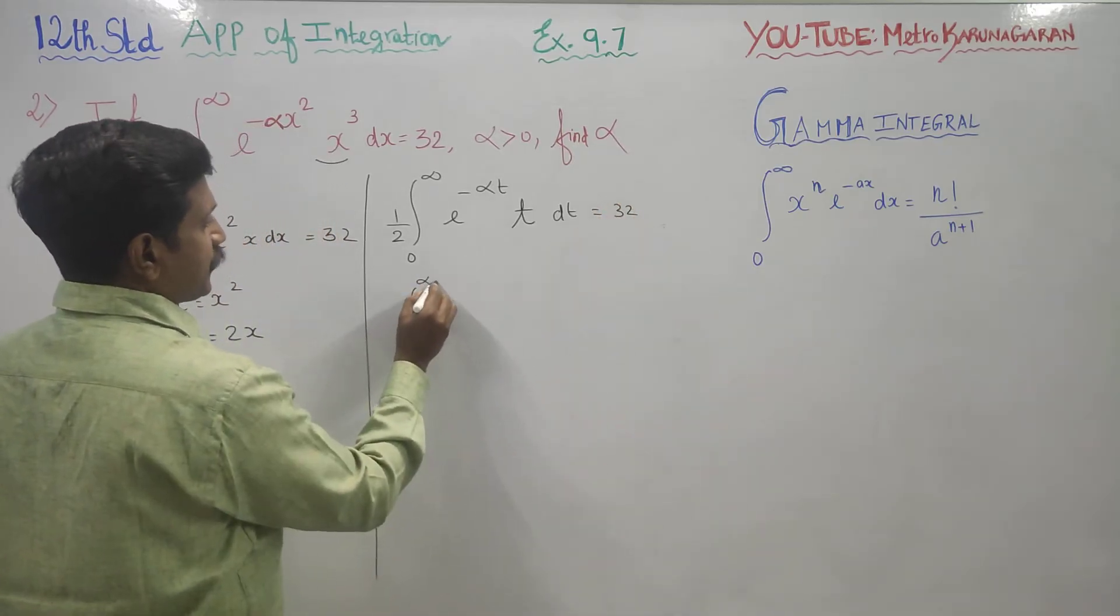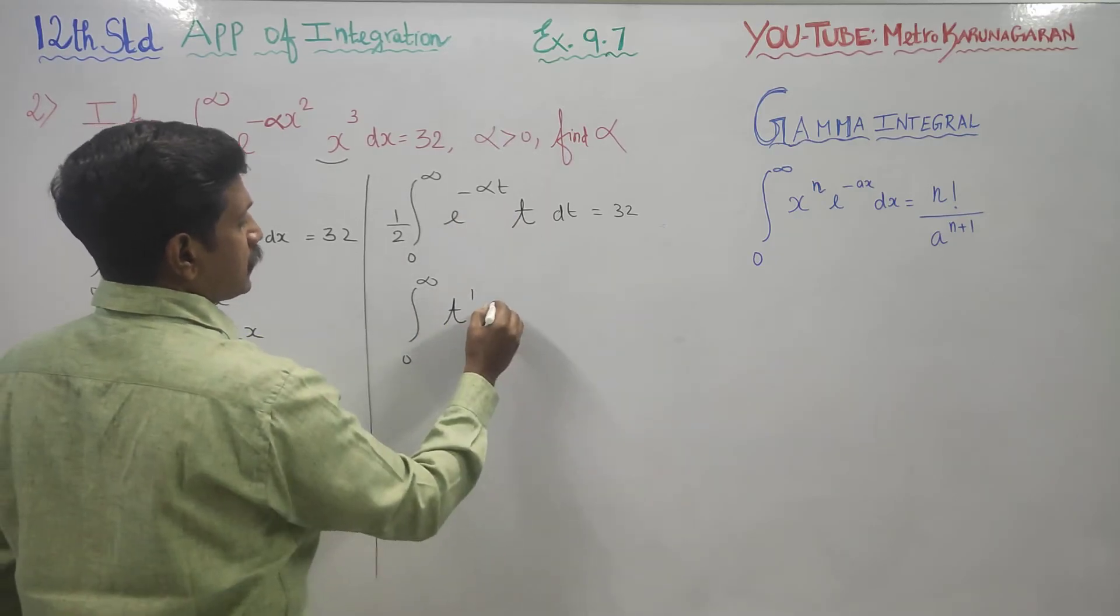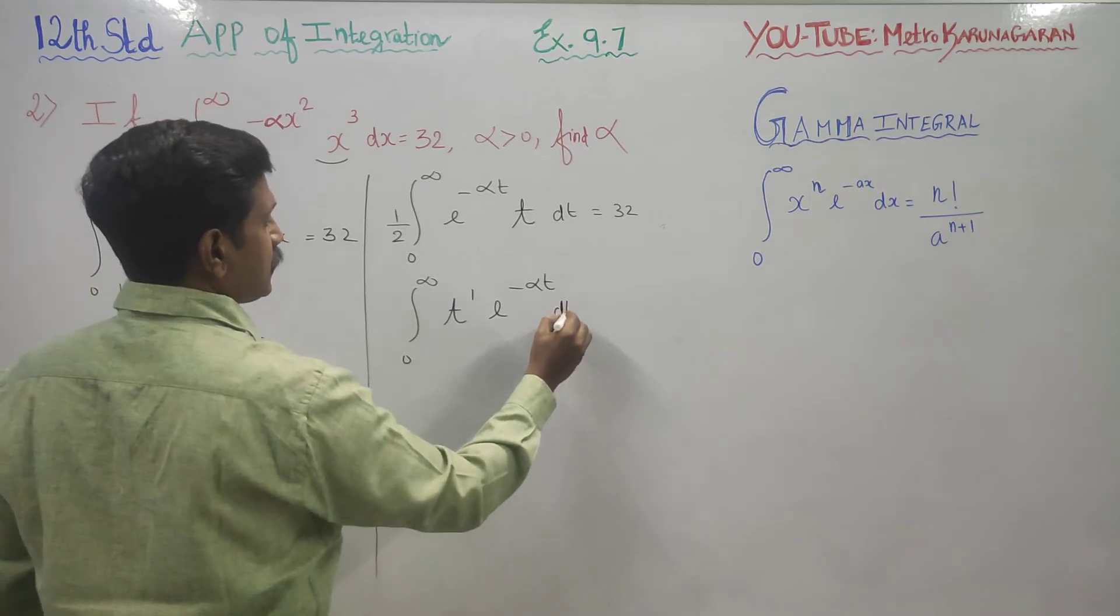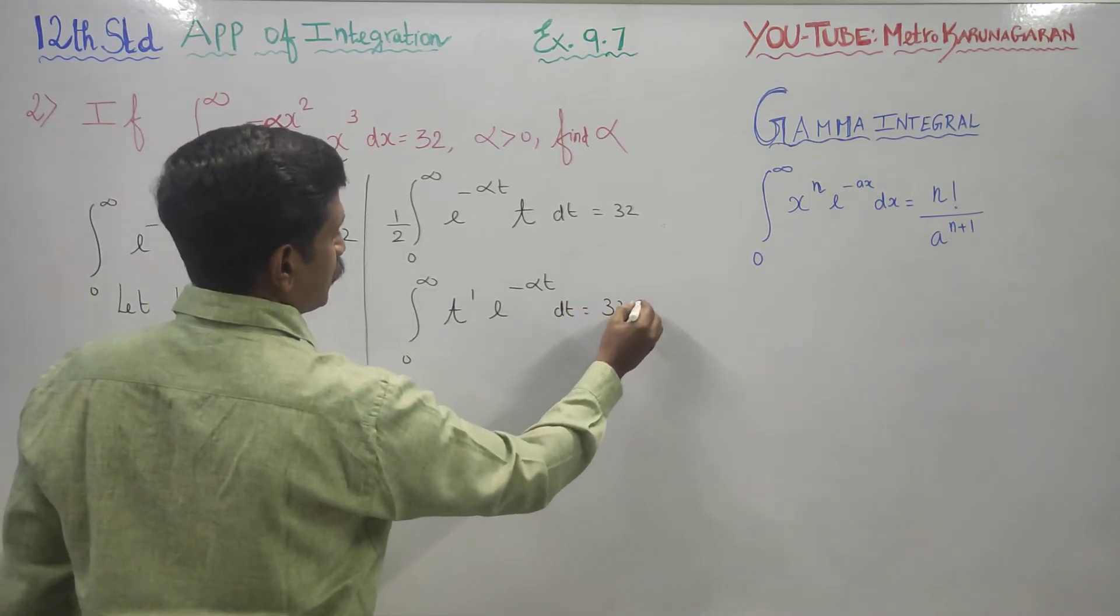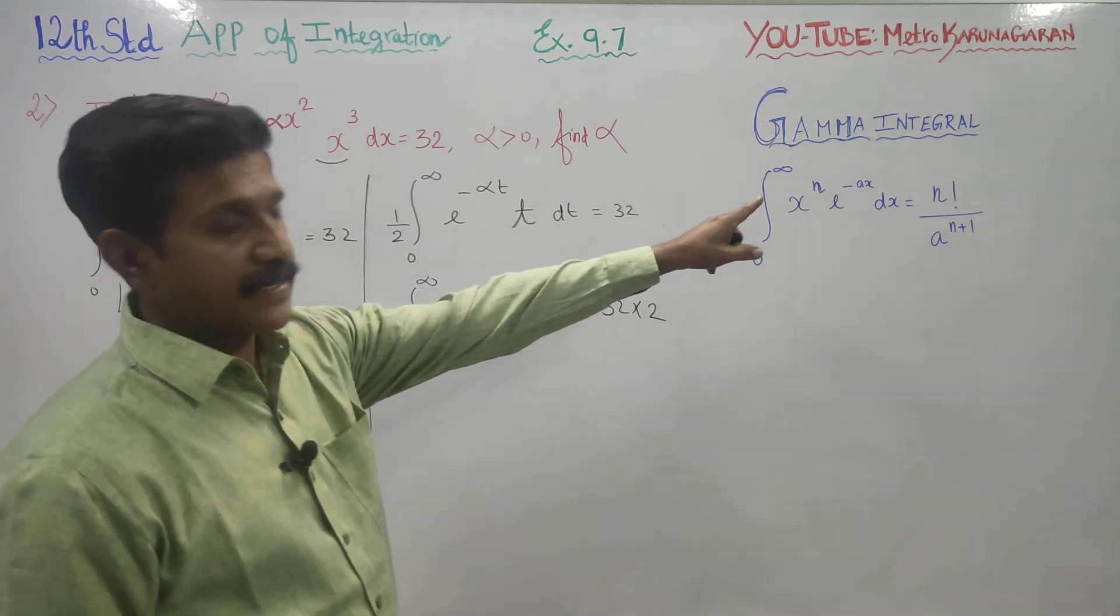Integration 0 to infinity, t to the power 1, e to the power minus alpha t, dt equals 32 times 2. Dividing by 2, it matches with the gamma integral.